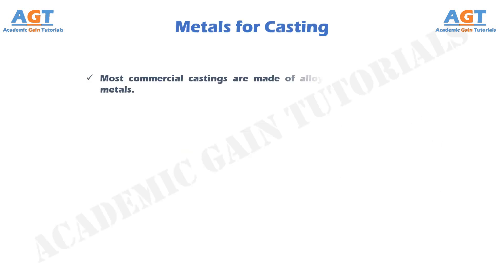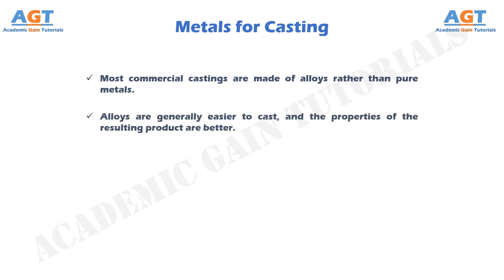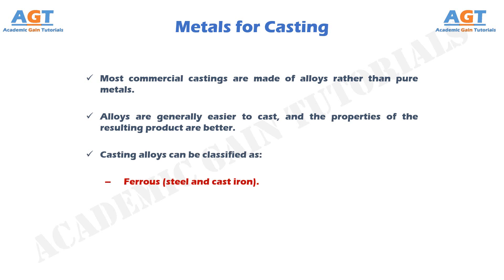Most commercial castings are made of alloys rather than pure metals. Alloys are generally easier to cast, and the properties of the resulting product are better. Casting alloys can be classified as ferrous — steel and cast iron — and non-ferrous.